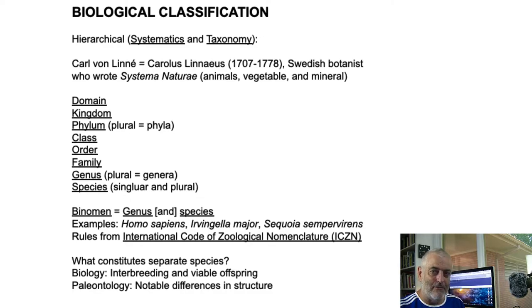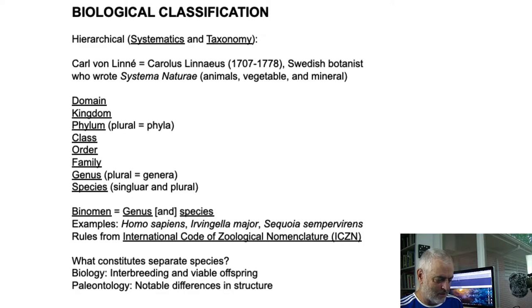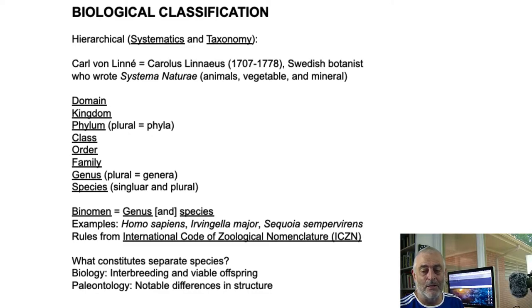The rules that govern how we use the binomen are in systematics and taxonomy. They use the International Code for Zoological Nomenclature, or ICZN — you can get a free copy from the internet. It talks about different kinds of ways that we recognize species and how we treat the names that go along with species. In biology, we think it's the interbreeding and the potential for having viable offspring that gives us a species. We can have some hybrids — like the mule — but typically they don't produce viable offspring.